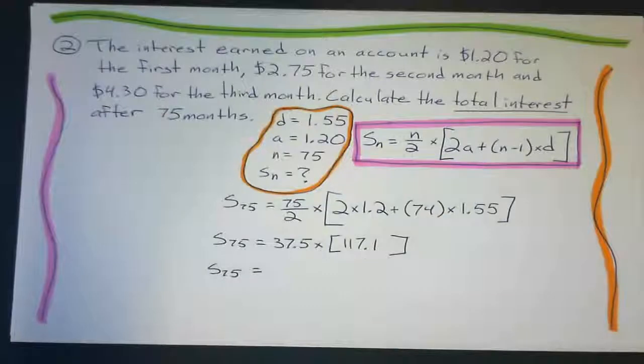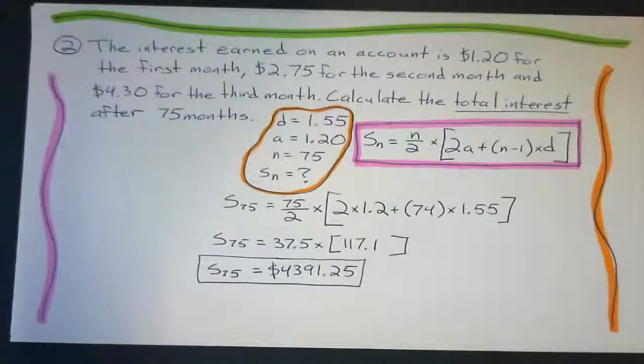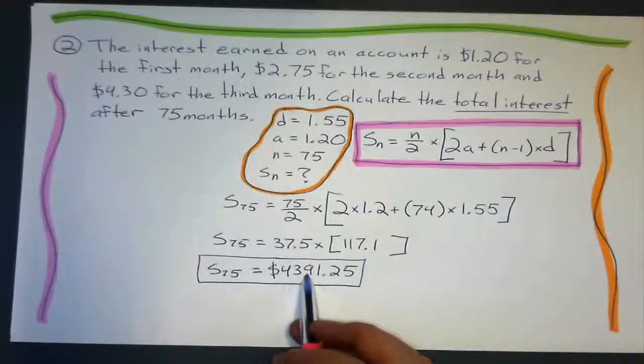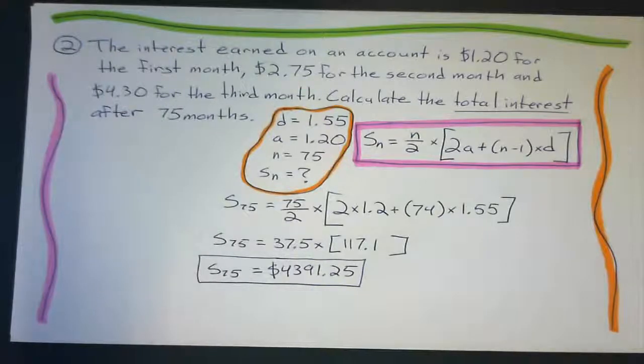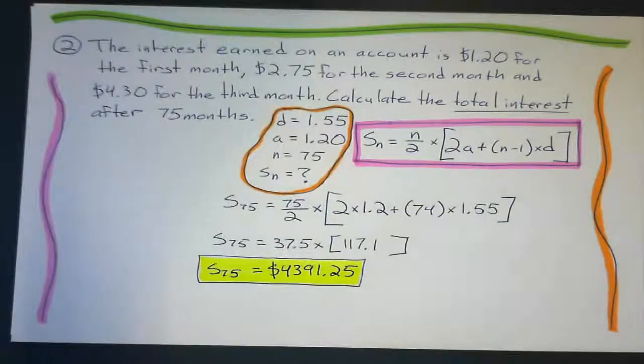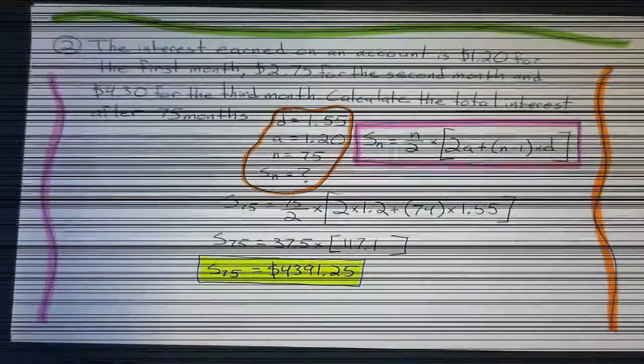Okay, so after 75 months, they will have earned $4,391.25 cents. That's all the 75 terms added together. And of course in New Zealand that interest would be taxed at 20%. So they wouldn't make all of that interest because that counts as income. And the government would tax it. Okay. So that's it for now. Now it's practice time.